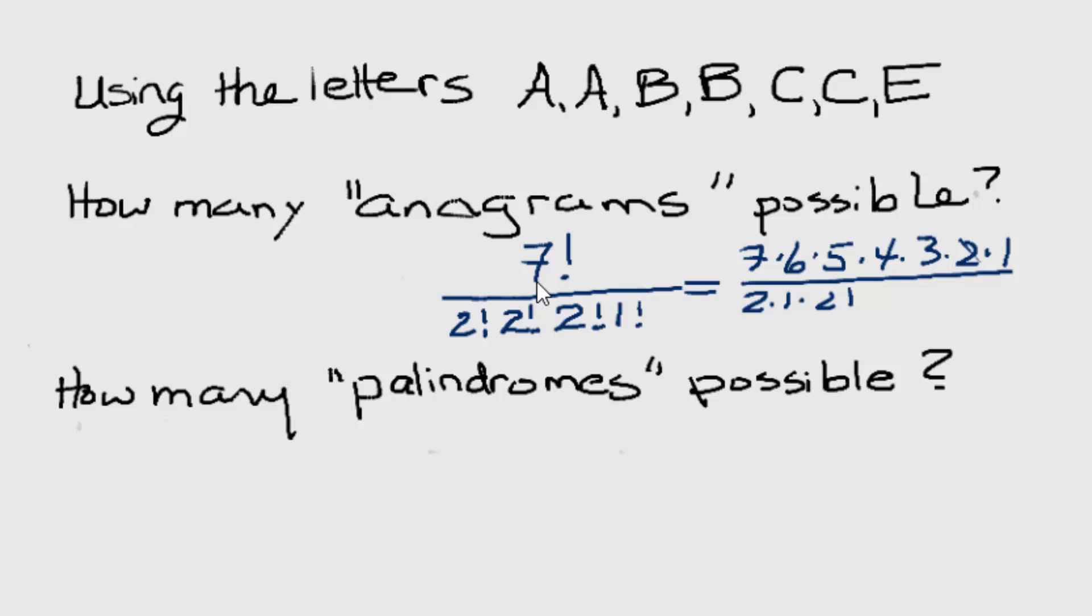Two times one, two times one, two times one, times one. Let's reduce. These twos divide to give us a factor of one. Two times two is four, which divides out the four from the numerator. Seven times six times five times three. So there are 630 different distinguishable anagrams we can get from these seven letters.